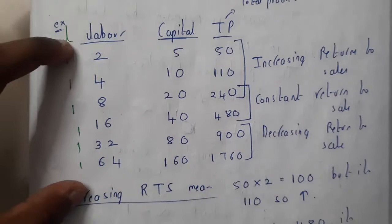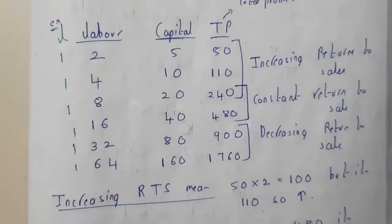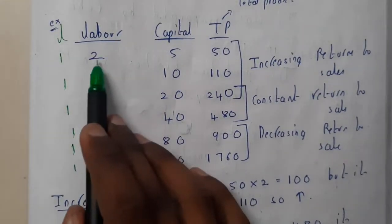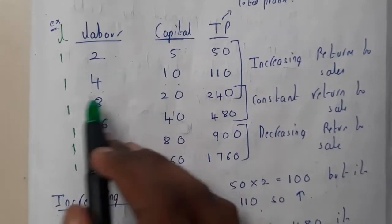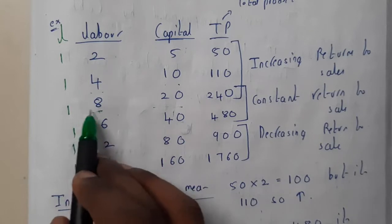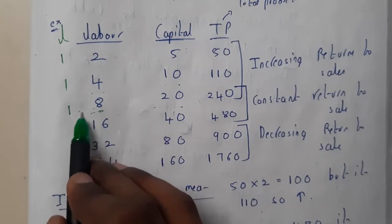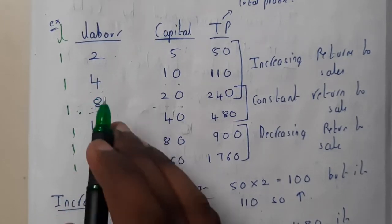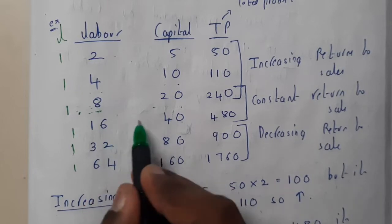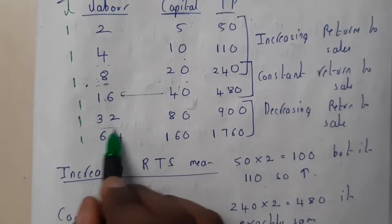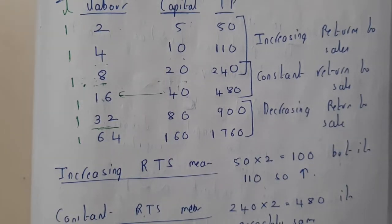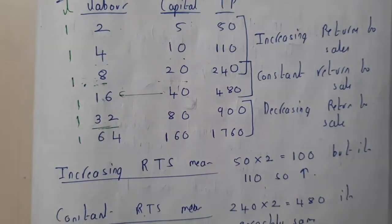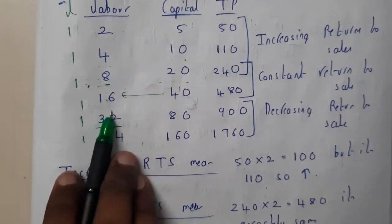Initially two members with five lakhs of capital will be working fine. After that four can work. When it is becoming eight, there could be some concession, so production has decreased a bit or became constant. When it reaches 32, it will be really hectic. There are 32 members in a small room.